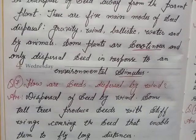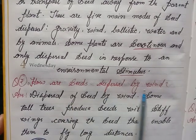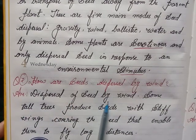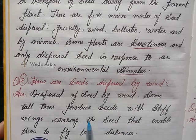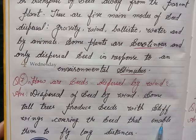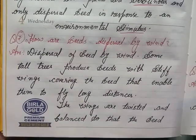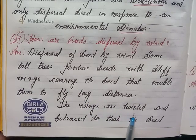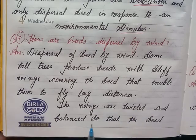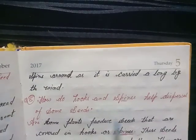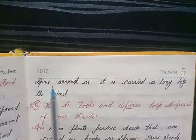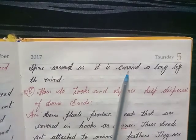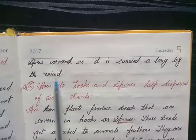Question 7: How are seeds dispersed by wind? Answer - Dispersal of seeds by wind: Some tall trees produce seeds with stiff wings covering the seed that enable them to fly long distances. The wings are twisted and balanced so that the seed spins around as it is carried along by the wind.